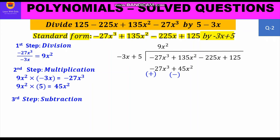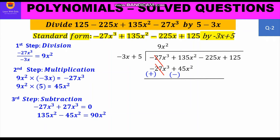Now the third step, subtraction. We change signs: −27x³ becomes +27x³ and +45x² becomes −45x². Then −27x³ cancels with +27x³, and +135x² − 45x² gives 90x². We bring down −225x, giving us the new dividend 90x² − 225x.